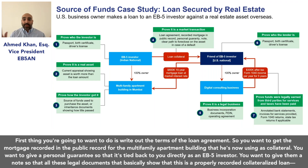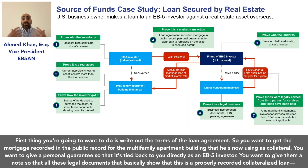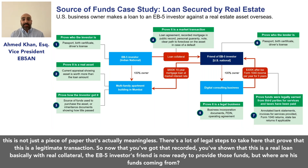The first thing you want to do is set out the terms of the loan agreement. You want to get the mortgage recorded in the public record for the multi-family apartment building being used as collateral. You want to give a personal guarantee so it's tied directly back to you as the EB-5 investor, and provide a note — all these legal documents show that this is a properly recorded, collateralized loan, not just a meaningless piece of paper.